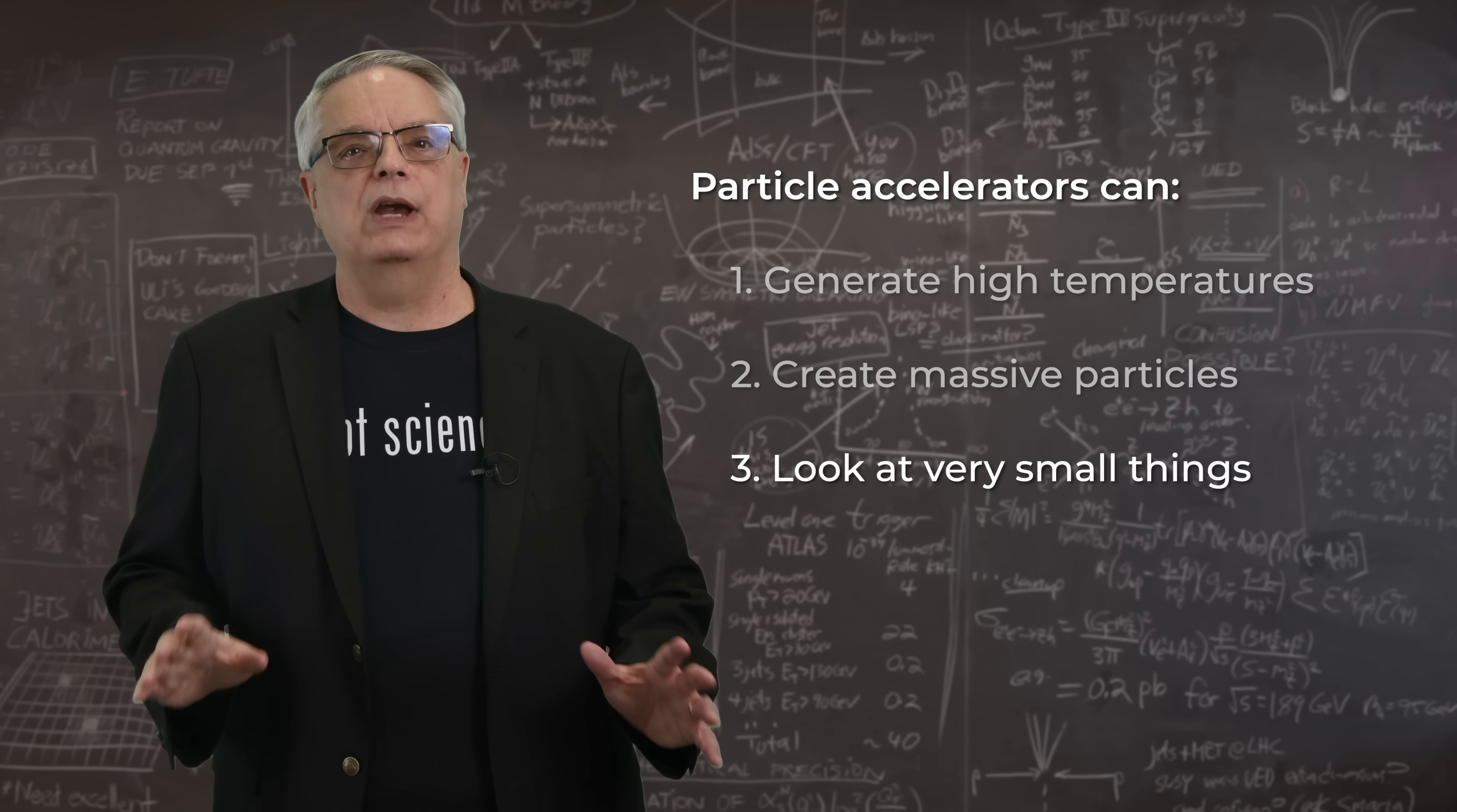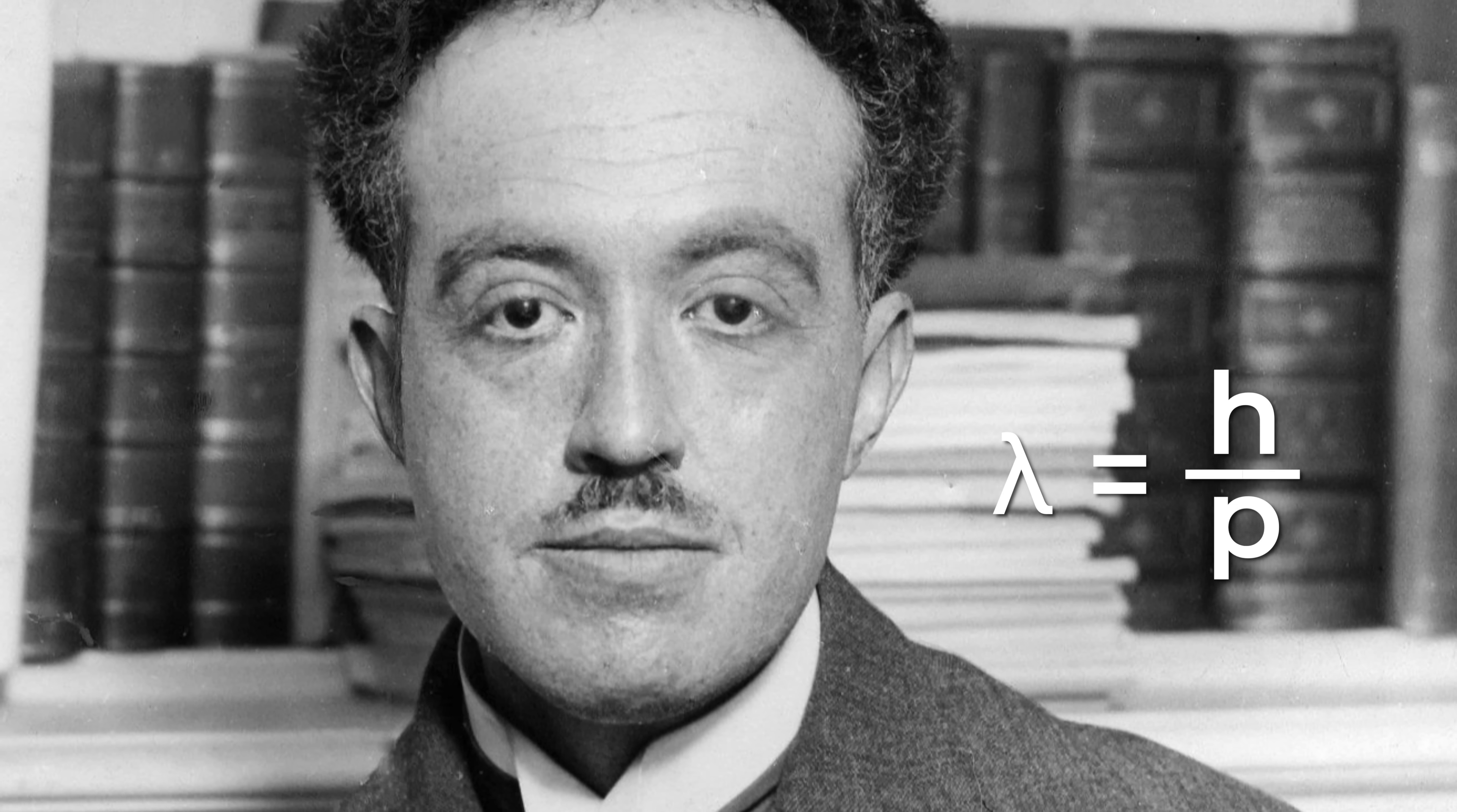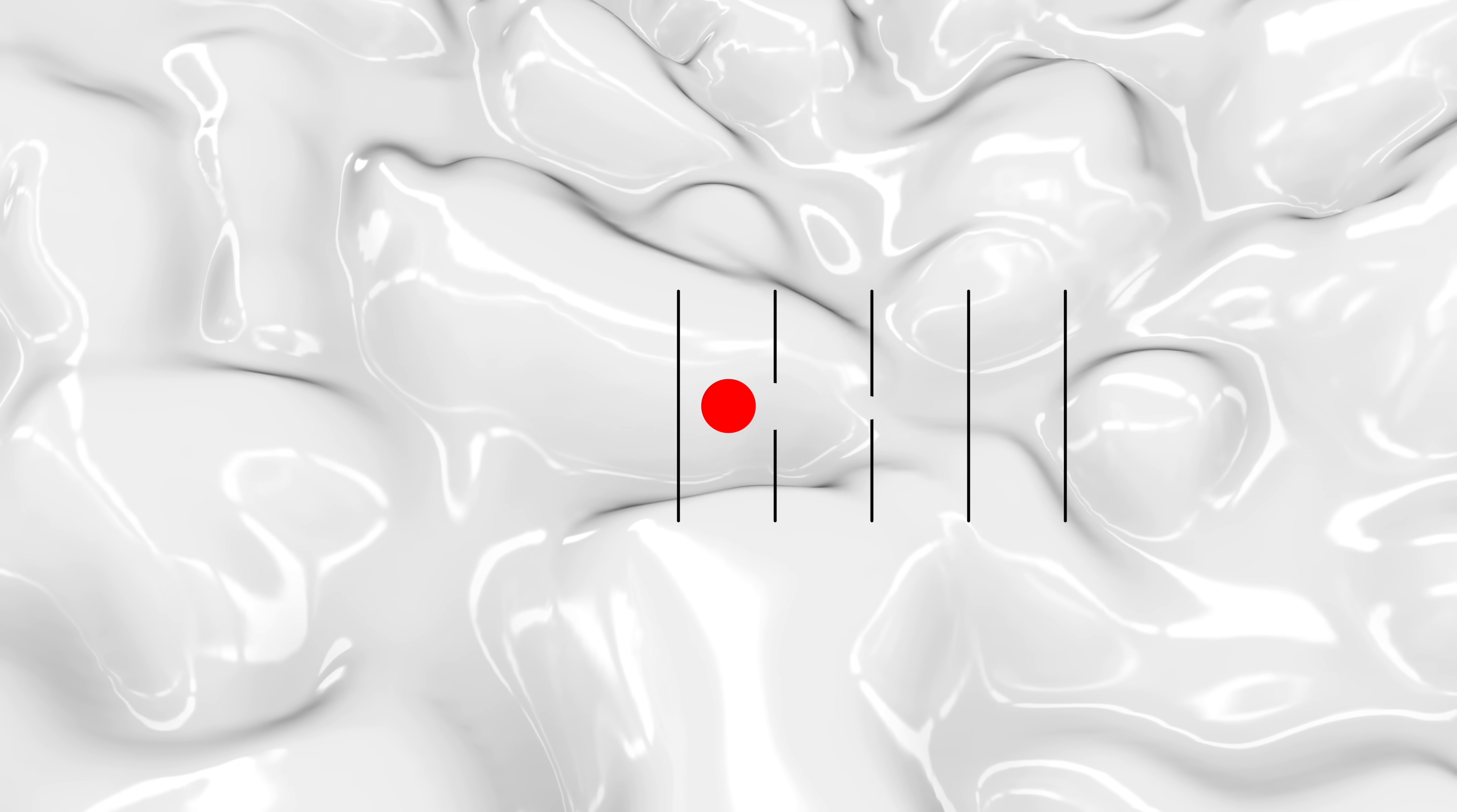The third thing that accelerators are able to do is to look for very small things. This is because of quantum mechanics. Quantum mechanics says that all particles are also waves with a wavelength. We've known this for a century, as it was worked out by French physicist Louis de Broglie back in 1924. He determined that the wavelength of a particle is equal to a number called the Planck constant divided by the momentum of the particle. So why is wavelength important? It's because if you want to use waves to see an object, the wavelength needs to be smaller than an object. If that happens, the waves are affected by the object. If the wavelength is bigger than the object, the waves wrap around it and they're basically unaffected by it.